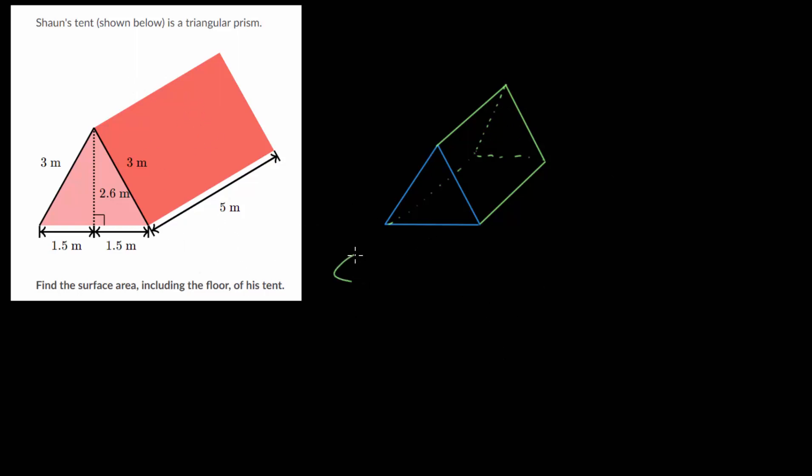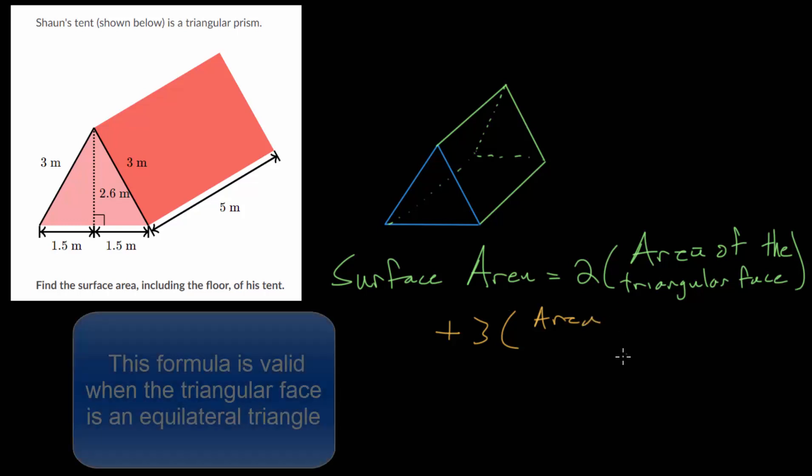So let's write that out, that the surface area of this triangular prism is twice the area of the triangular face, plus three times the area of the rectangular faces. So you can say three times the area of the rectangular faces.